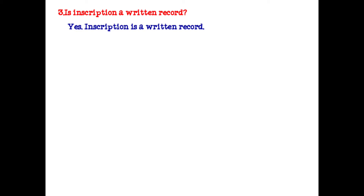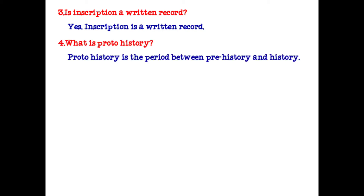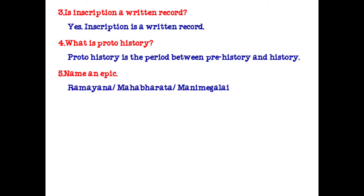Third question: is inscription a written record? Yes, inscription is a written record. Fourth question: what is proto-history? Proto-history is the period between pre-history and history. Fifth question: name an epic. Ramayana, Mahabharata, Manimeghalai — any one answer is enough.